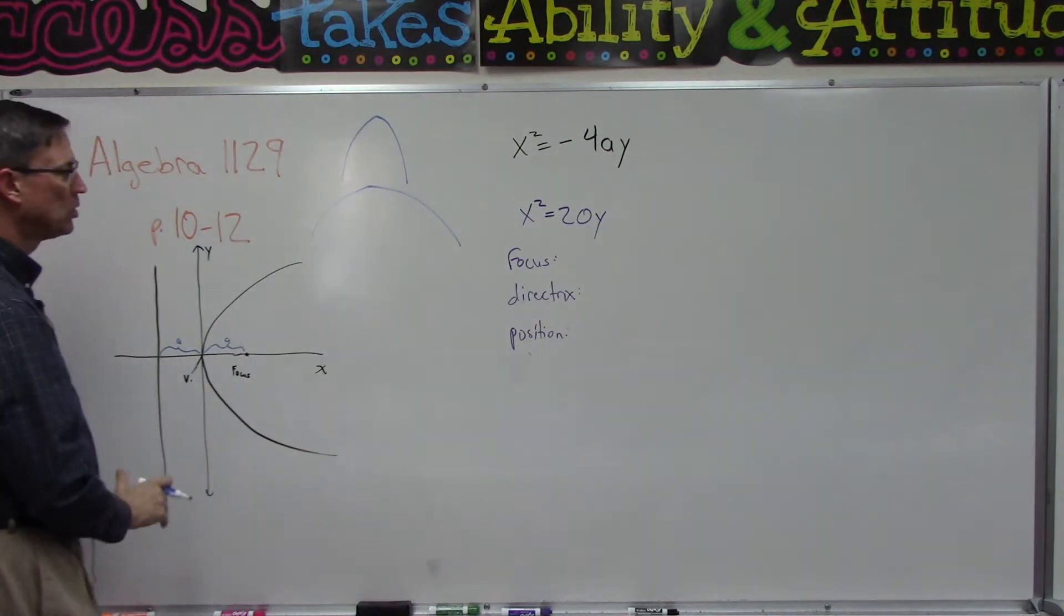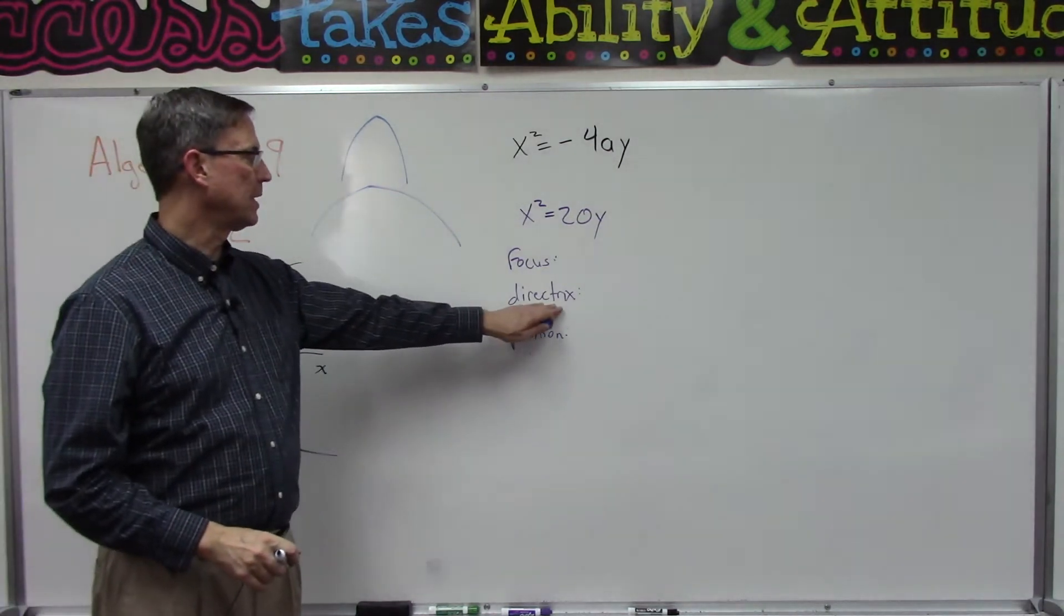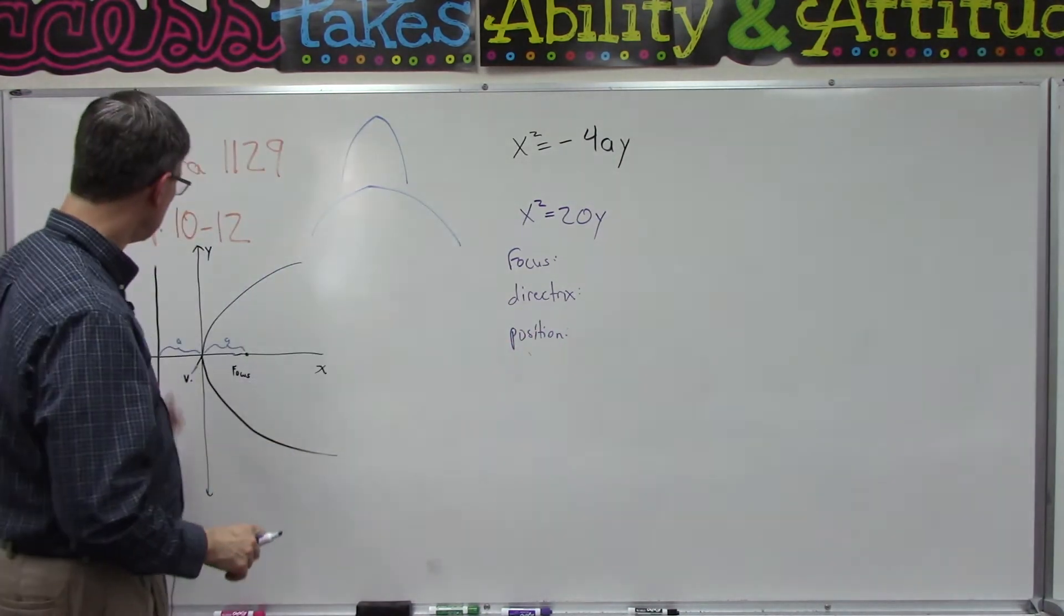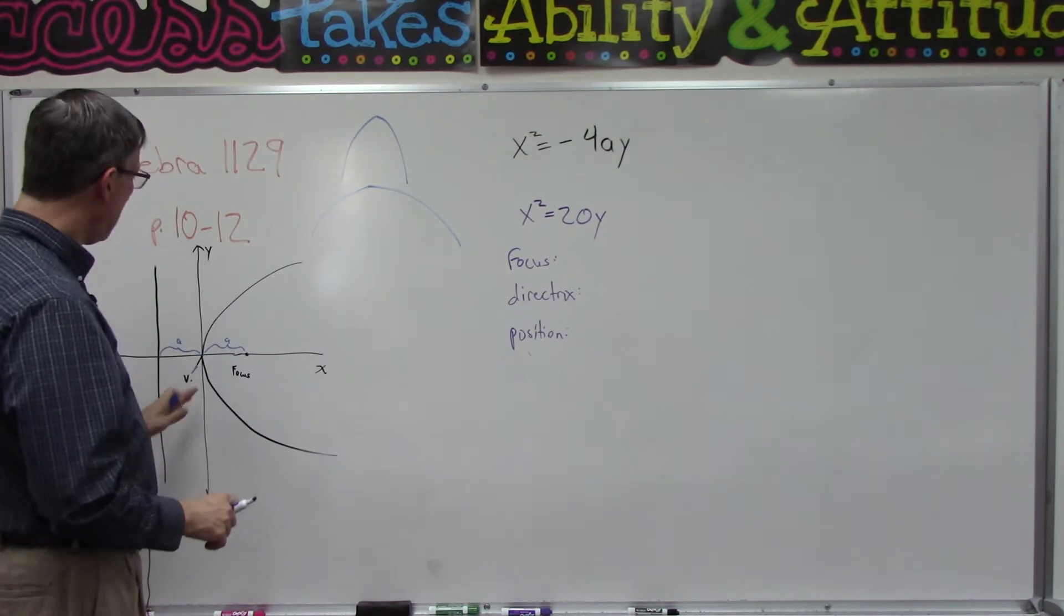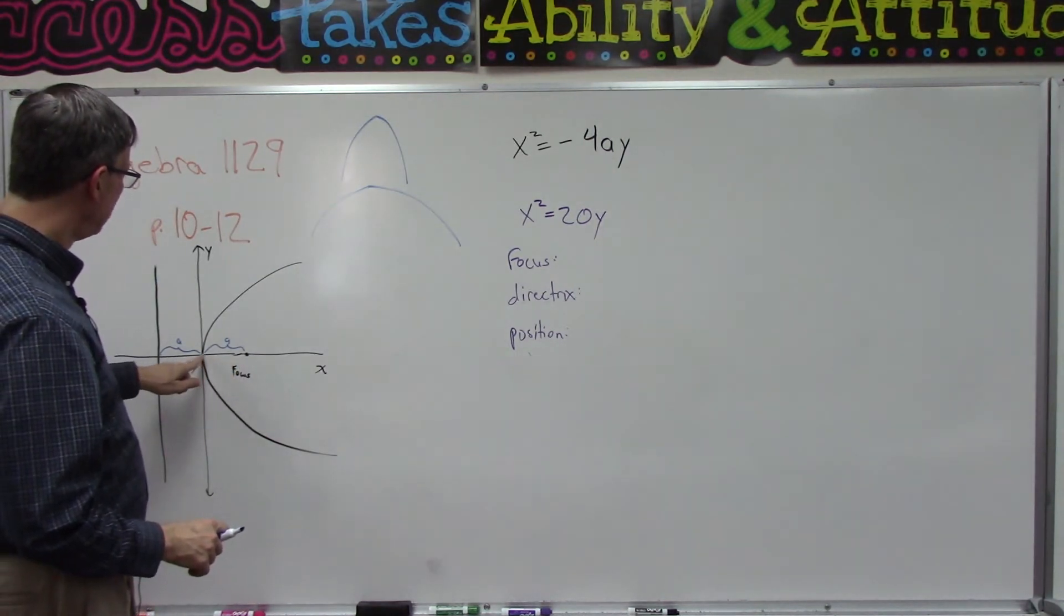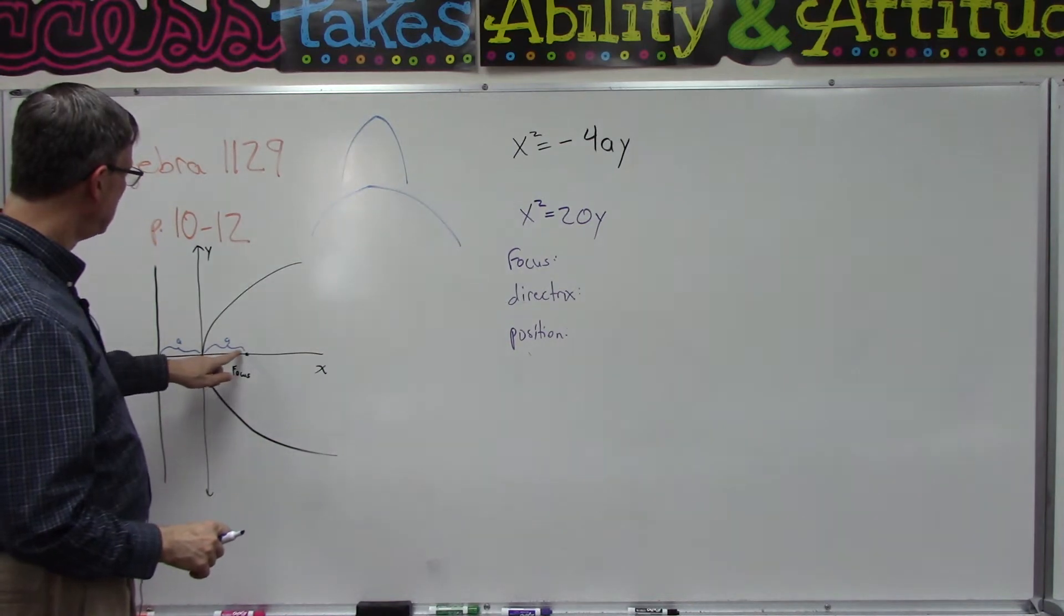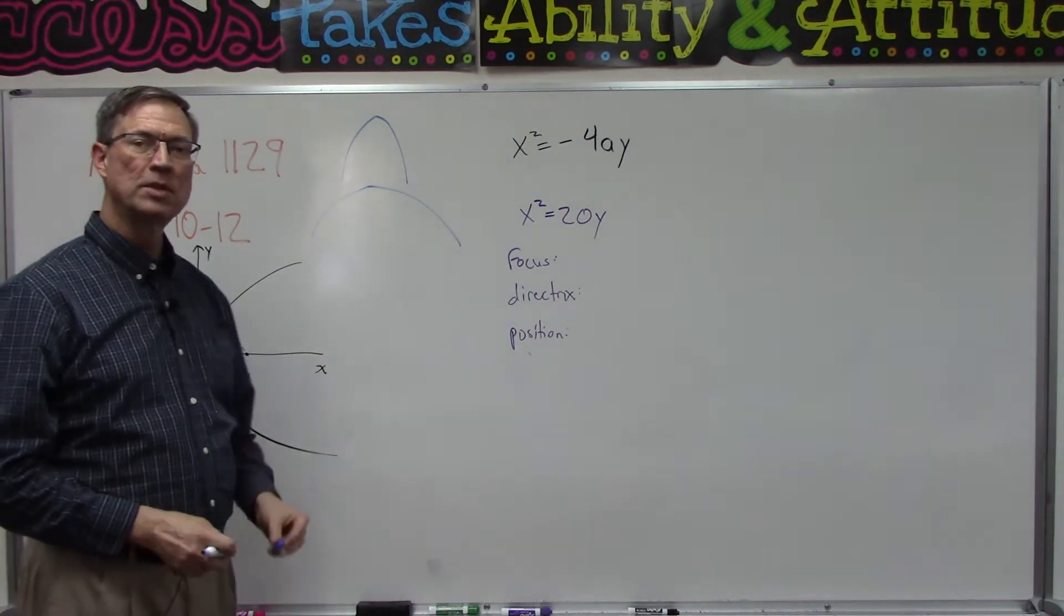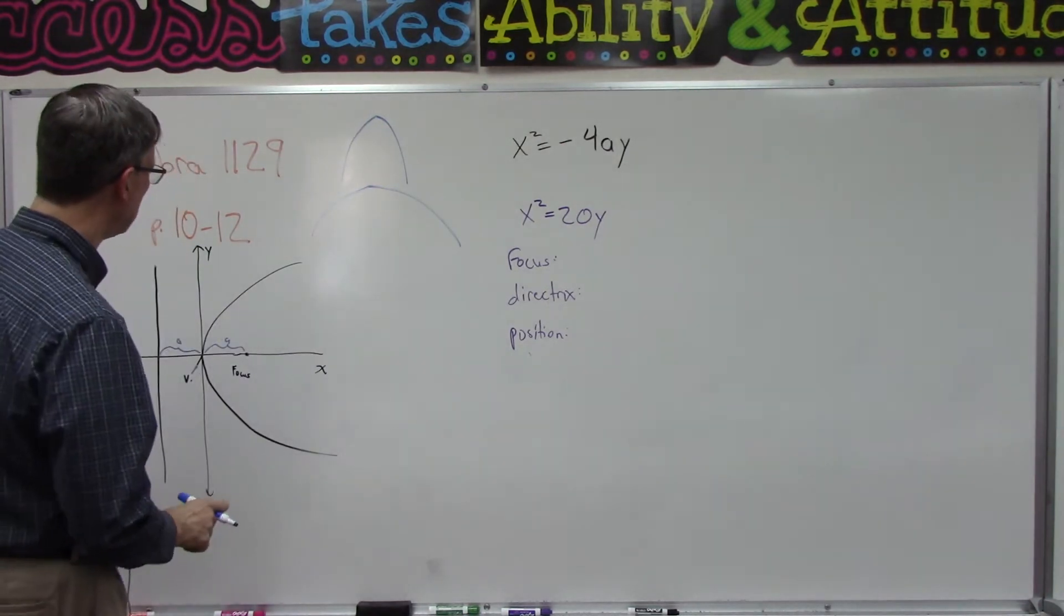And this line is called the directrix - kind of tricky, directrix. So it's a line, and then the focal point called the focus is from the origin the same distance in, so a distance of a. But here's what's interesting and it's kind of hard to tell just by looking at the picture.